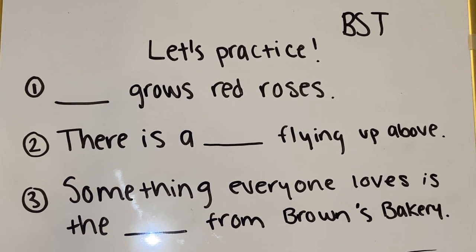Now you can practice choosing your own subject for a sentence. I've written three example sentences for you to use. Again, you can pause the video if you'd like to. Pick a subject that would work for these sentences and fill in the blank spaces. Sentence one says blank grows red roses. Sentence two says there is a blank flying up above. Sentence three says something everyone loves is the blank from Brown's Bakery.